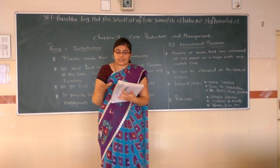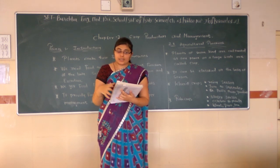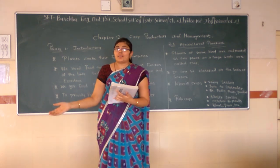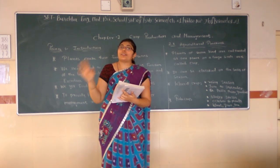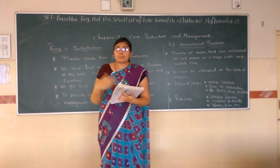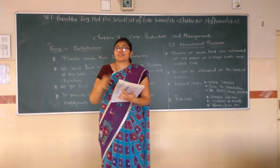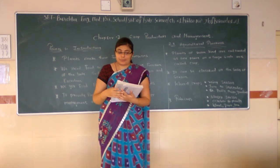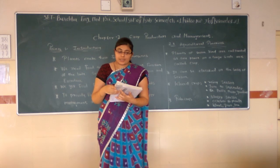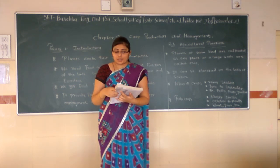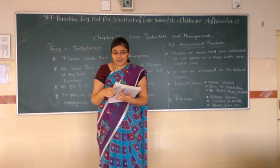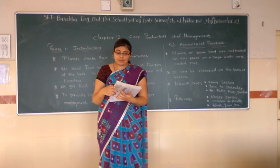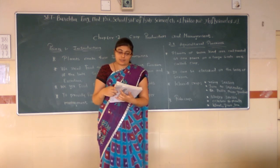Long ago, people did not have a fixed place to stay. They were nomadic — wandering from place to place in search of food and shelter. They ate raw fruits and vegetables and started hunting animals for food. Later, they cultivated land and produced rice, wheat, and other crops.